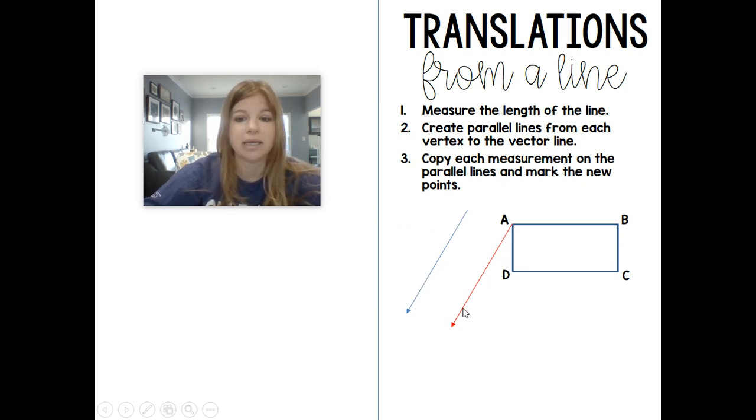So point A would become A prime, B would then get translated to B prime, and notice that these lines that I'm creating are parallel to my vector line, the direction that I want to go in.